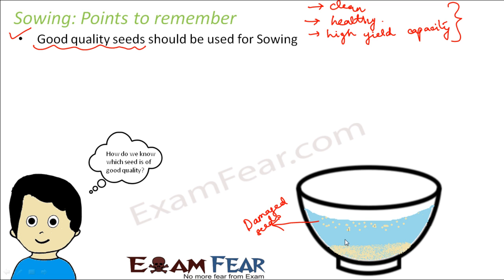If you use damaged seeds, since there is nothing inside them, they cannot give rise to proper plants. A good seed should contain the seed leaves, the radicle, and the plumule inside it — all the structures should be present in a proper way. In a damaged seed, nothing is inside, which is why it is hollow, lighter, and floats on water. Using damaged seeds will not give us good plants, so we must ensure that only good quality seeds are used for sowing to get good quality plants and better crop yield.